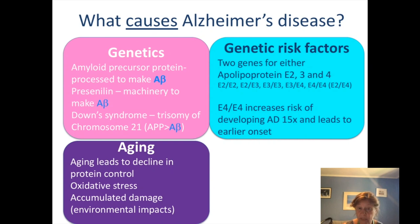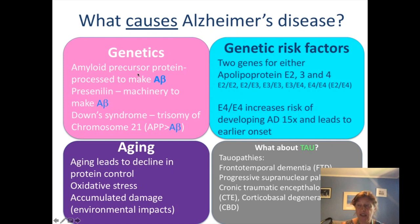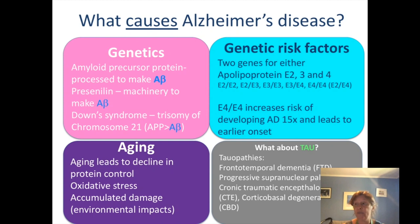What about tau? There are a number of different dementias known as tauopathies, where tau is the primary protein that's deposited — the primary source of that pathology — with no amyloid beta, just tau. This tells us that tau alone is enough to provide the risk of getting a type of dementia.